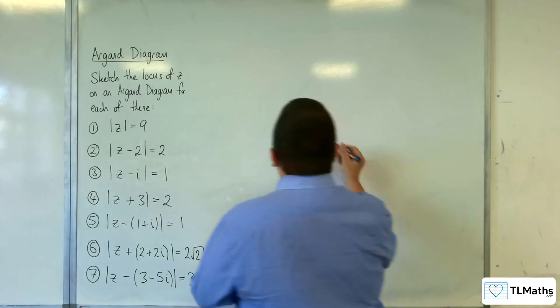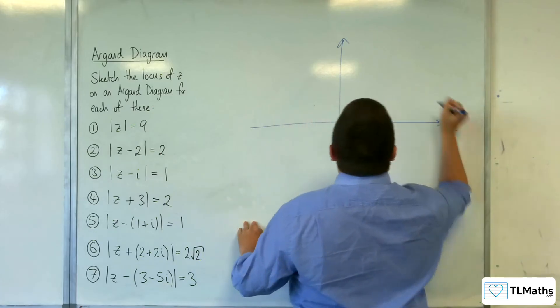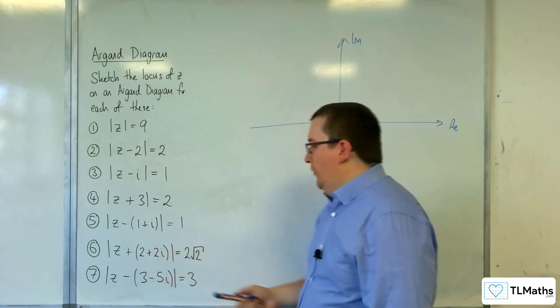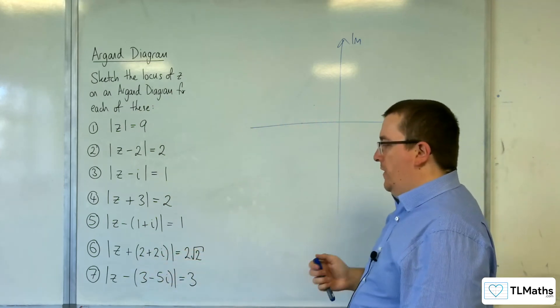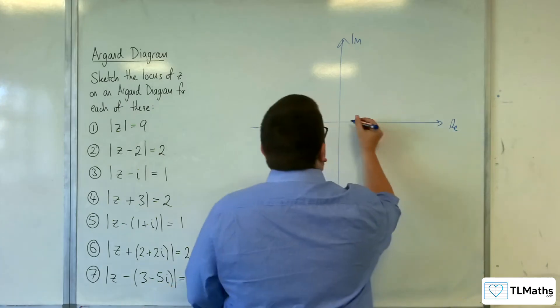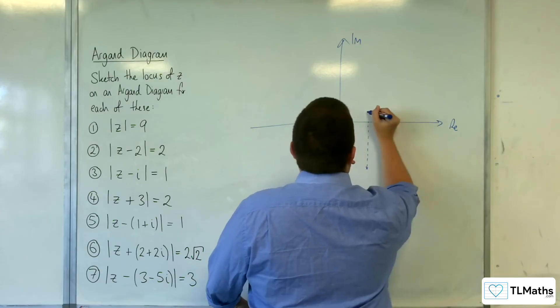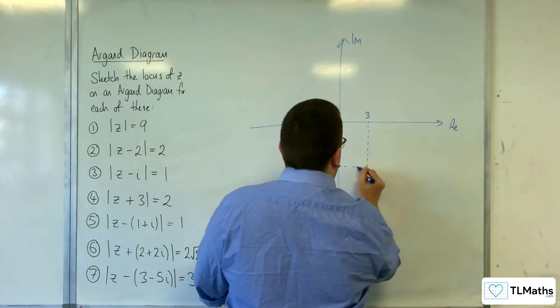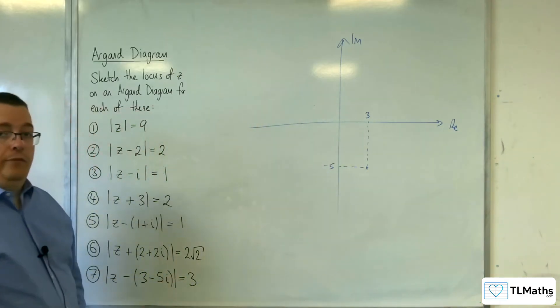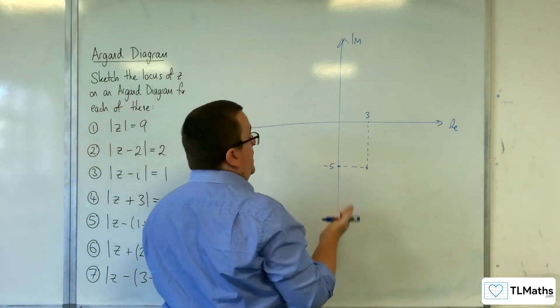Let's have a look at this last one. So modulus of z take away 3 take away 5i is equal to 3. So it's centred at 3 take away 5i. So something there down here. That's going to be 3, that's minus 5. It's got a radius of 3.